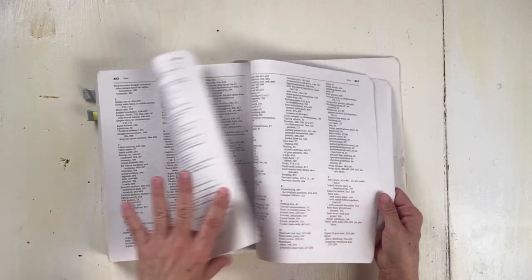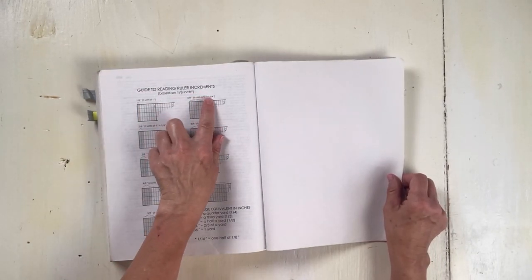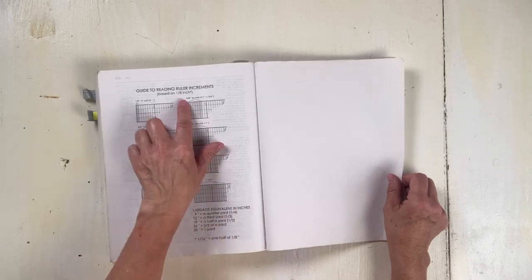And then further back you have your index, so everything that's in the book. And then here a guide to reading ruler increments based on the eighth inch ruler.